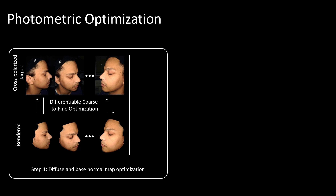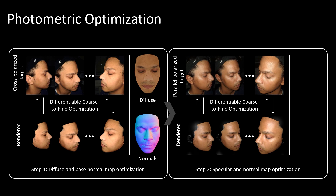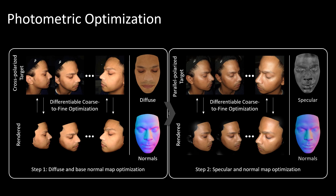Specifically, we propose a two-step photometric optimization. Using the cross-polarized data, we recover the diffuse and an initial normal map of the subject using a coarse-to-fine optimization procedure. We then recover the specular map and refine the normal map using the parallel-polarized images.